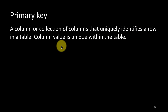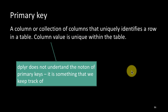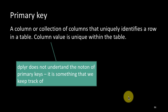A primary key is a column or collection of columns that uniquely identifies a row in the table. The column value is unique within the table, or when we say collection of columns, the collection of column values would be unique within the table. dplyr does not actually understand the notion of a primary key — it's not concerned with something being a primary key or not — but it's a good idea for us to identify and apply the notion because it has practical applications when dealing with data.